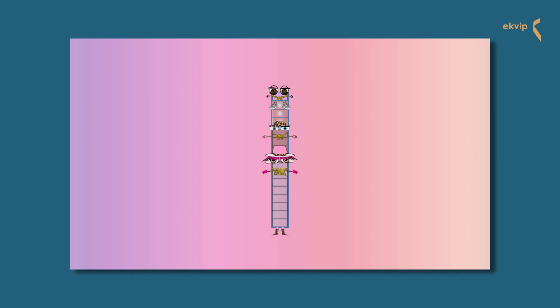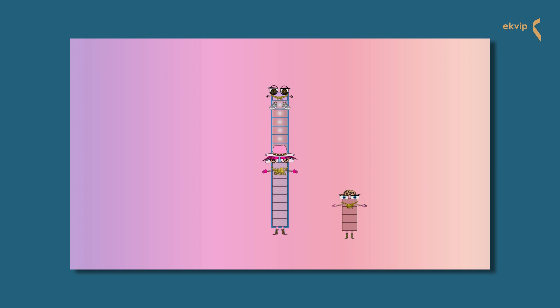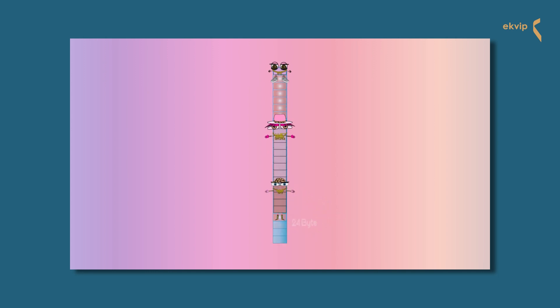BaboBy and BaboG don't get along with each other, so BaboG decides to separate them. He swaps places with BaboG. Now seven filler bytes are inserted behind BaboBy to reach the limit corresponding to the following data type, divisible by 8 bytes. After BaboG, four filler bytes are inserted to reach a limit corresponding to the largest data type, divisible by 8 bytes.